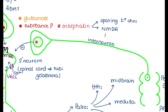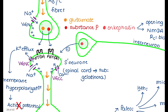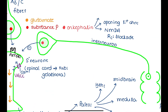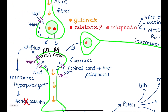Enkephalin also inhibits NMDA receptors, blocking the binding of glutamate to NMDA and thereby blocking the transmission of pain signals. Additionally, enkephalin blocks voltage-gated calcium channels on the secondary neuron, so less calcium enters the cell, causing less depolarization and less action potential formation.